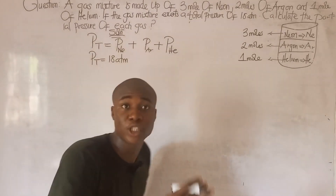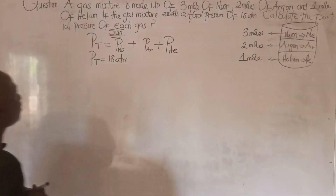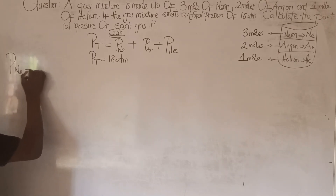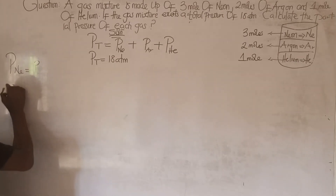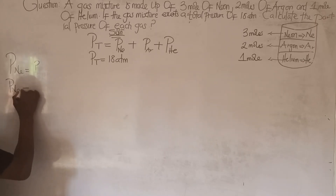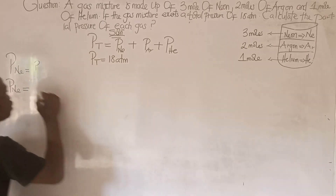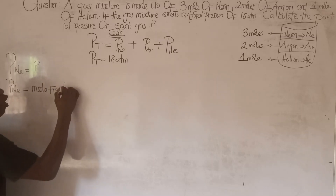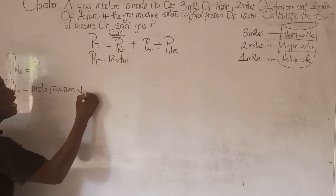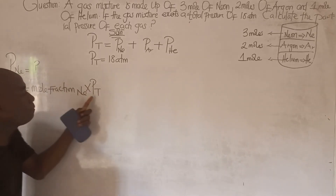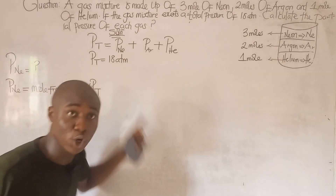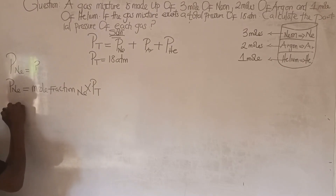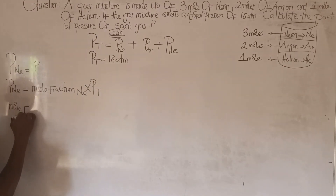For the first gas, Neon: partial pressure of Neon equals the mole fraction of Neon times P_t. To get the mole fraction of Neon, we place the number of moles of Neon in the numerator, over the addition of all the moles — number of moles of Neon plus Argon plus Helium. So the mole fraction of Neon equals number of moles of Neon over (n_Ne + n_Ar + n_He).